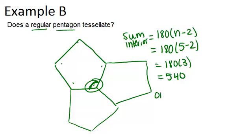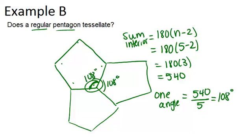So that means one angle will be 540 degrees divided by five, which is 108 degrees. So that means this is 108 degrees. This is 108 degrees. And this can't possibly be part of a regular pentagon because 108 degrees doesn't go into 360.